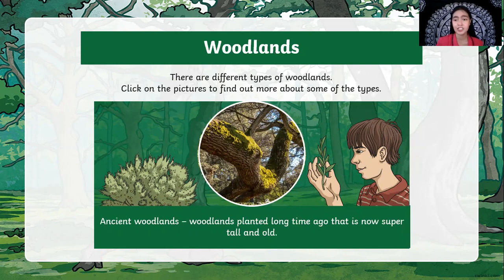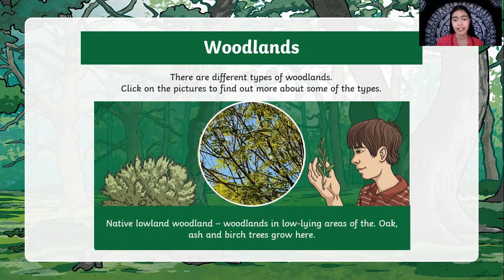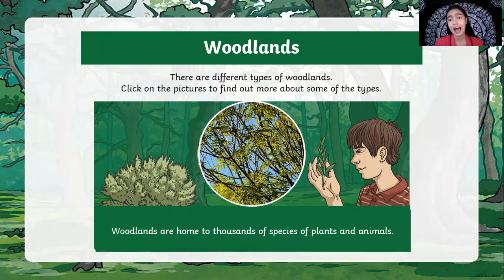You can see that the trees there have already produced moss — that's why you know it is already old. Native lowland woodland refers to woodlands in low-lying areas of the land where we can plant oaks, ashes, and birch trees. We also have woodlands that are near the forest, and these woodlands are home to different types of species, plants and animals. The woodland provides shelter for different types of plants and animals.